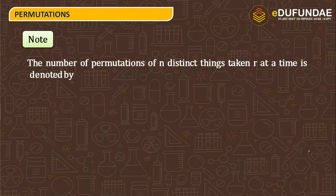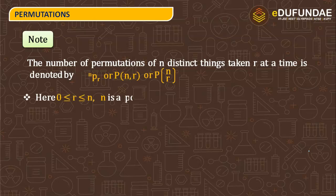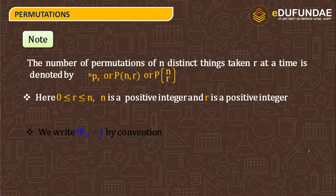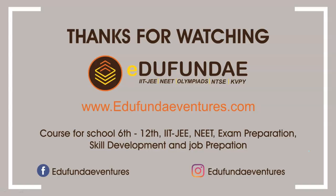If we look at the formula to find permutations: the number of permutations of n distinct things taken r at a time is denoted by NPR, where r is also a positive integer. By convention, NP0 equals 1. I hope this session was productive for you. Thanks for watching.